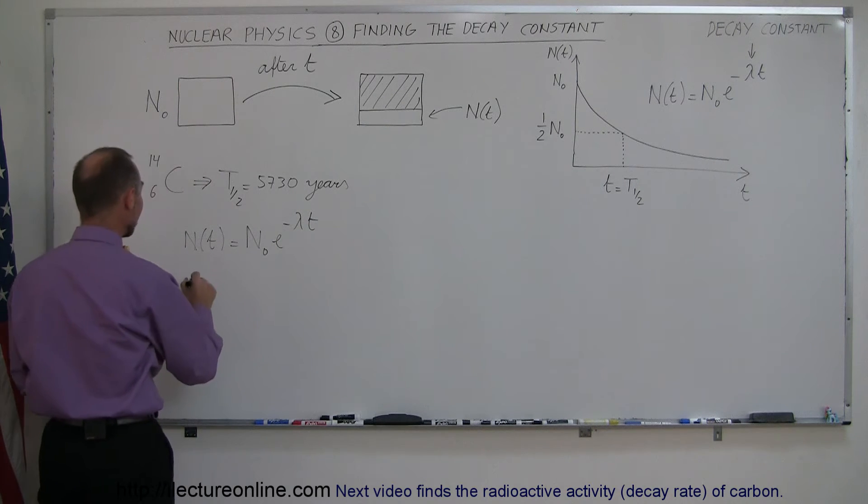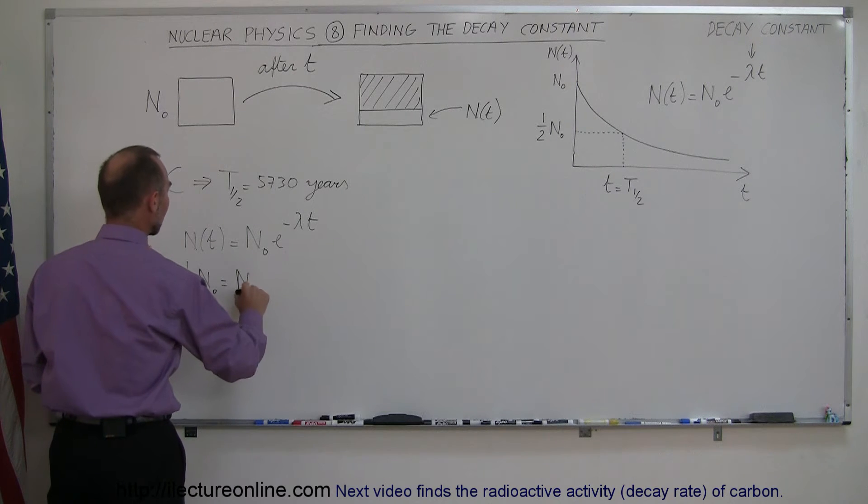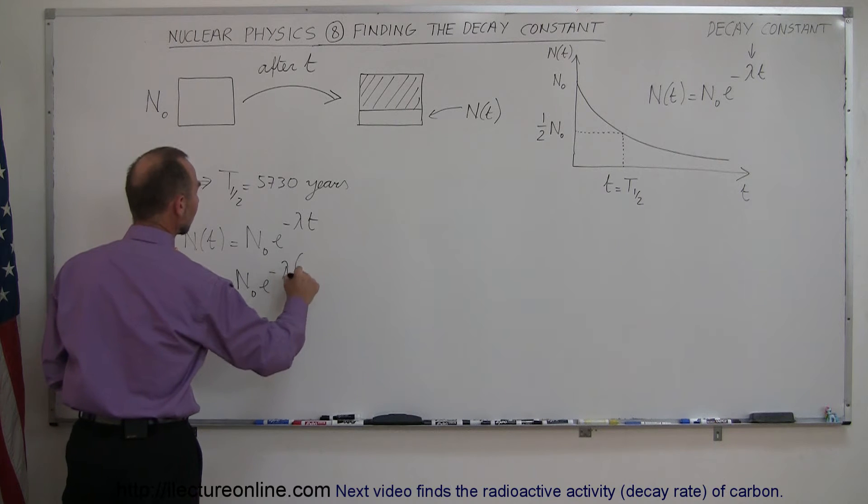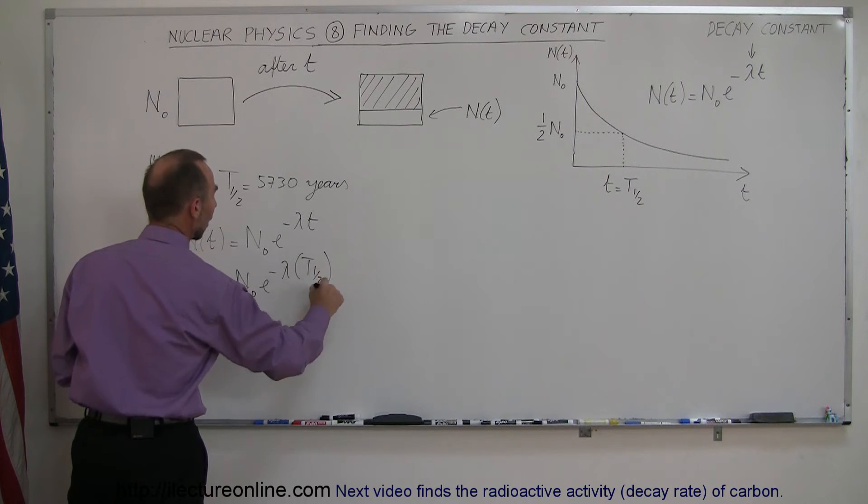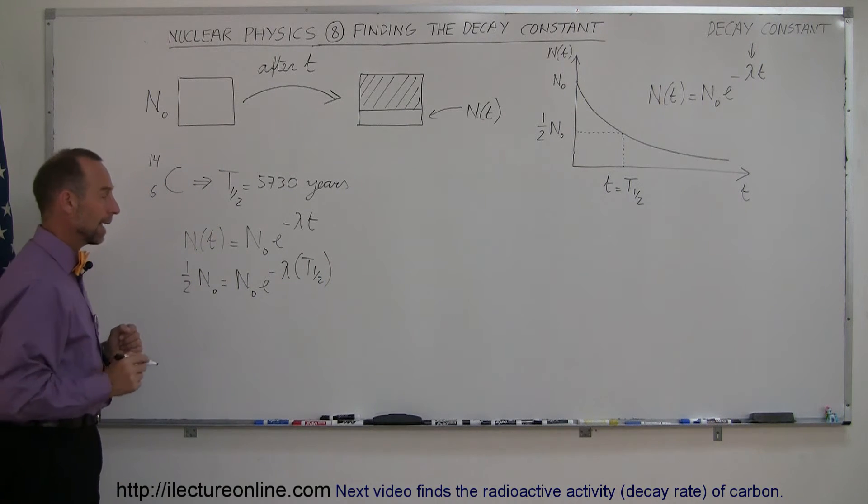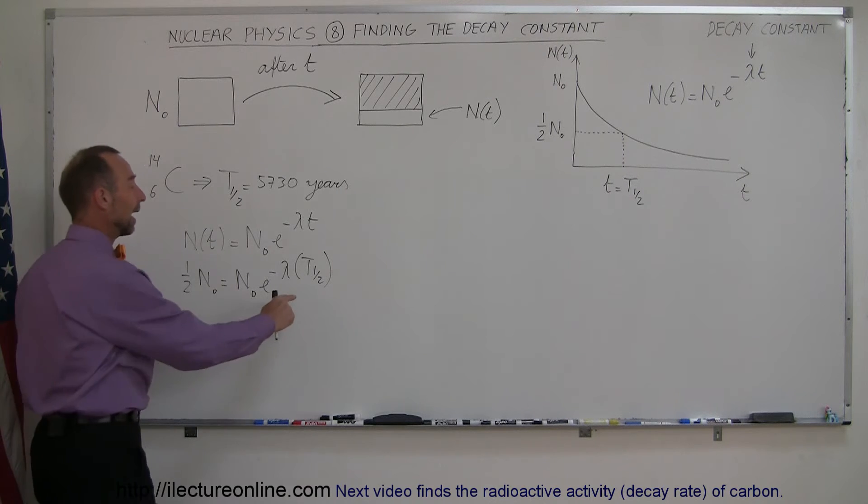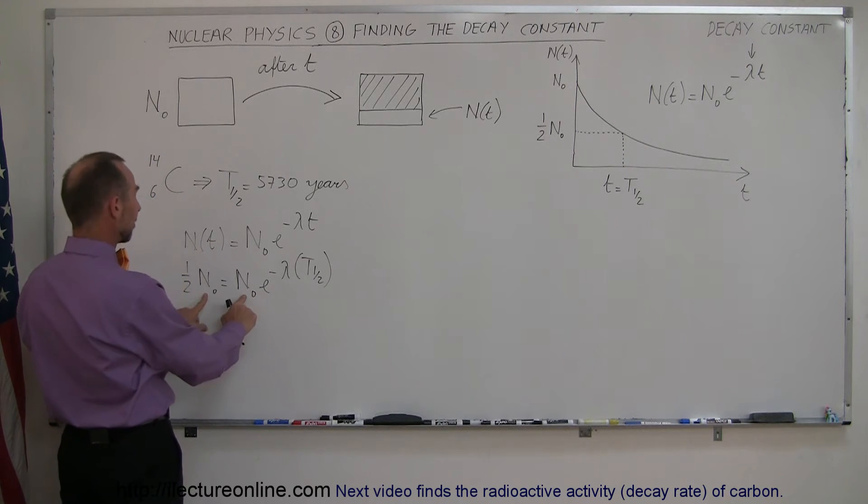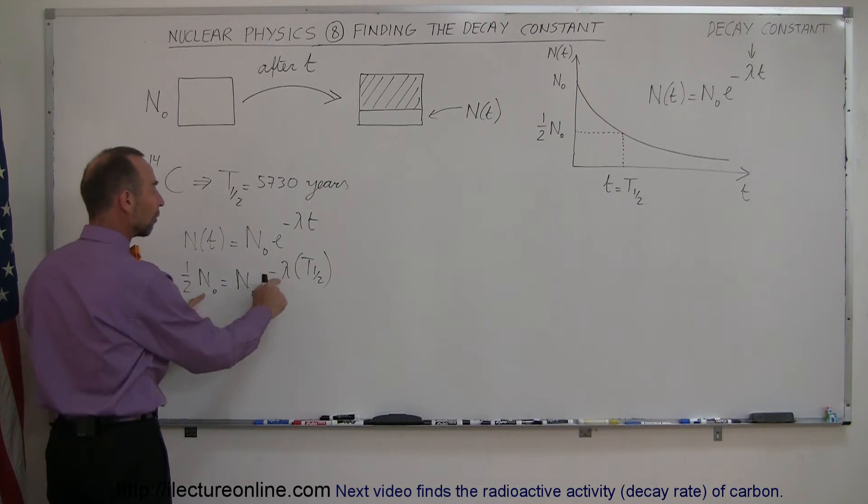So what we can say then is that one-half, the original amount, is equal to the original amount times e to the minus lambda when t is replaced by the half-life of that material. And then, since we know what the half-life is, and we can cancel out the n sub-naught on both sides, we can solve for lambda.